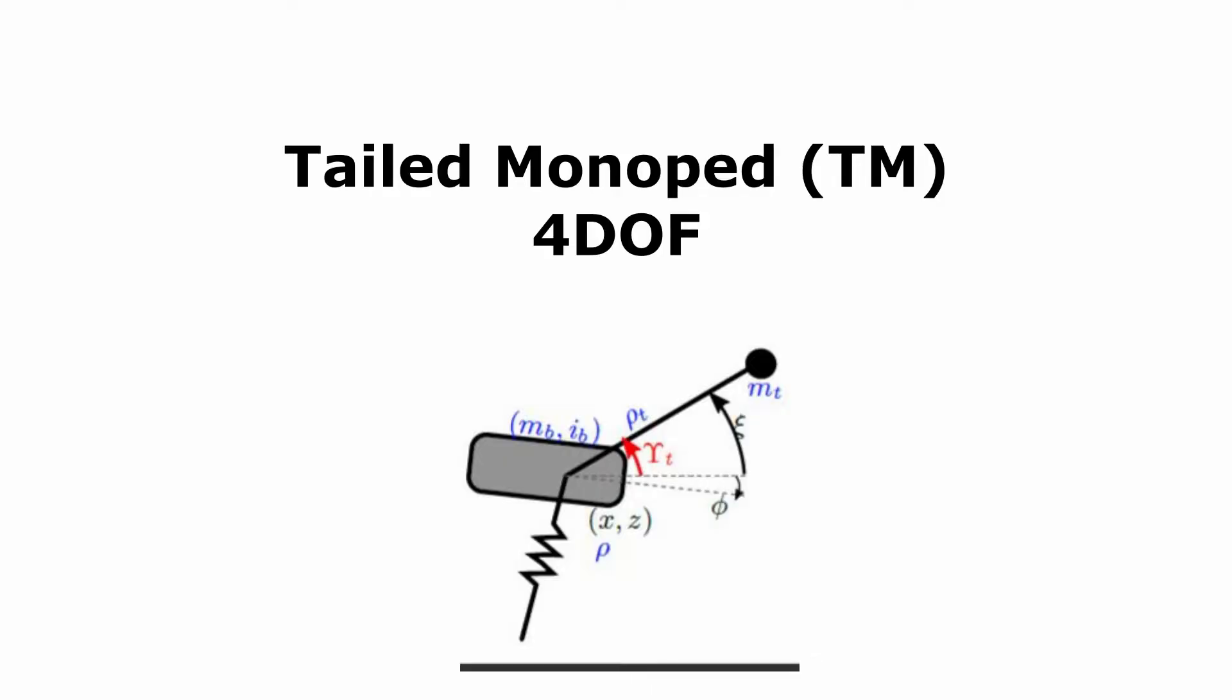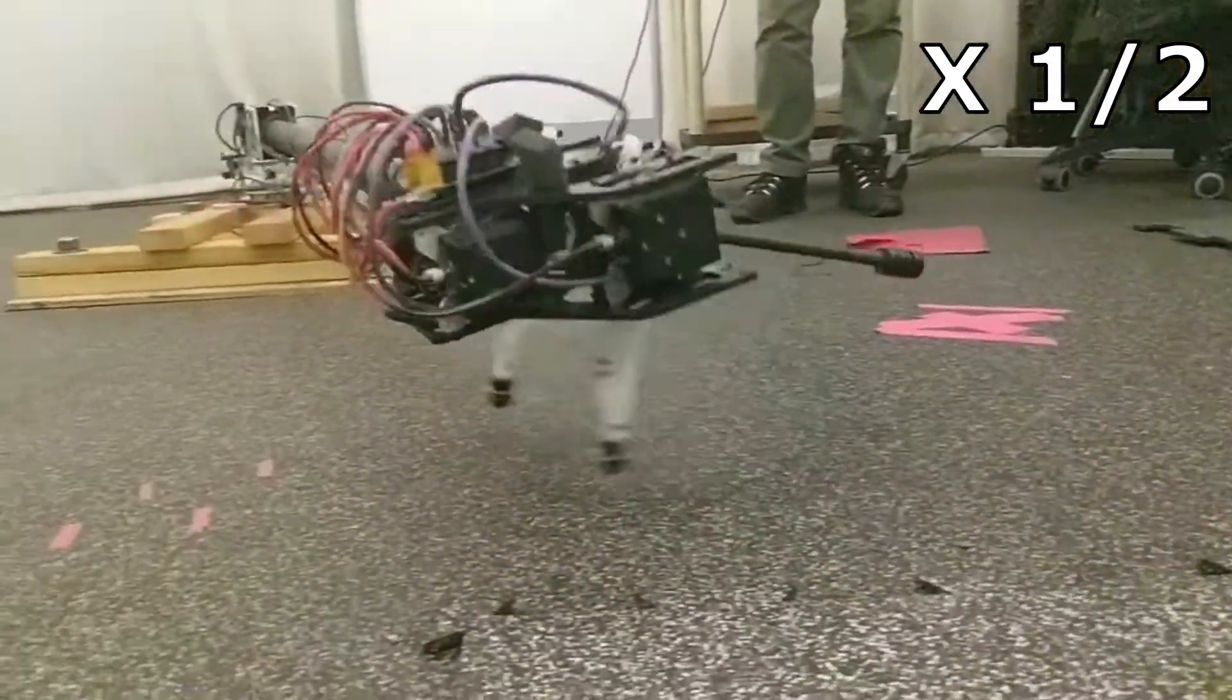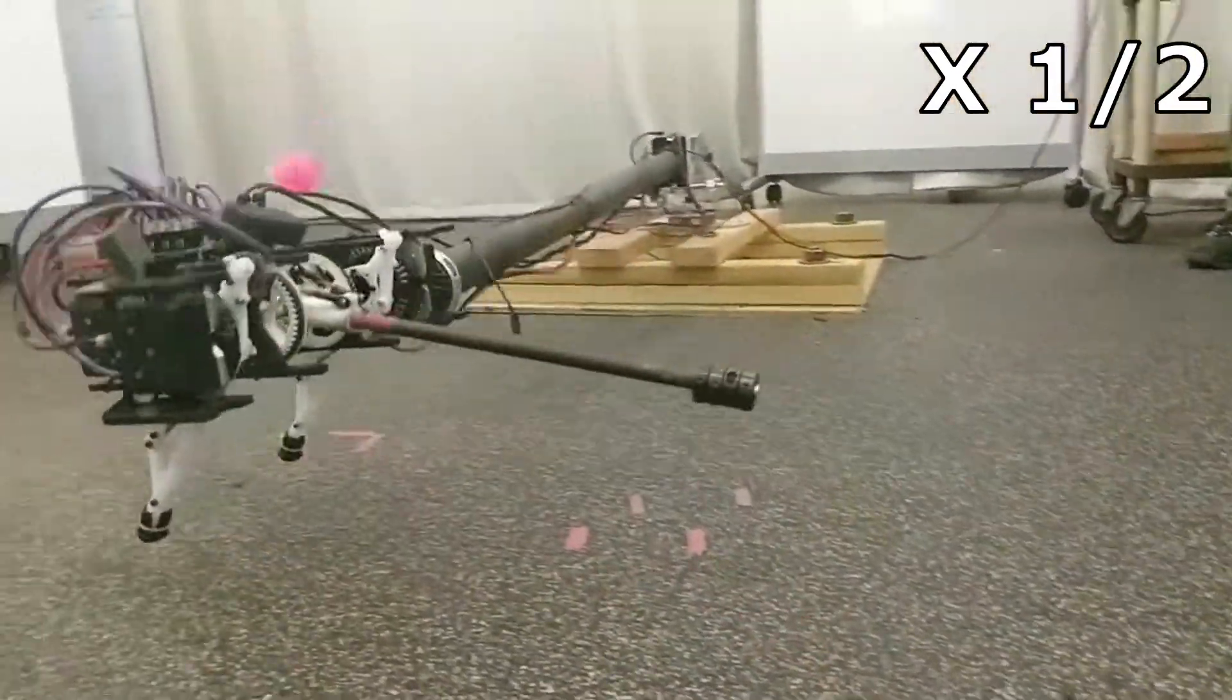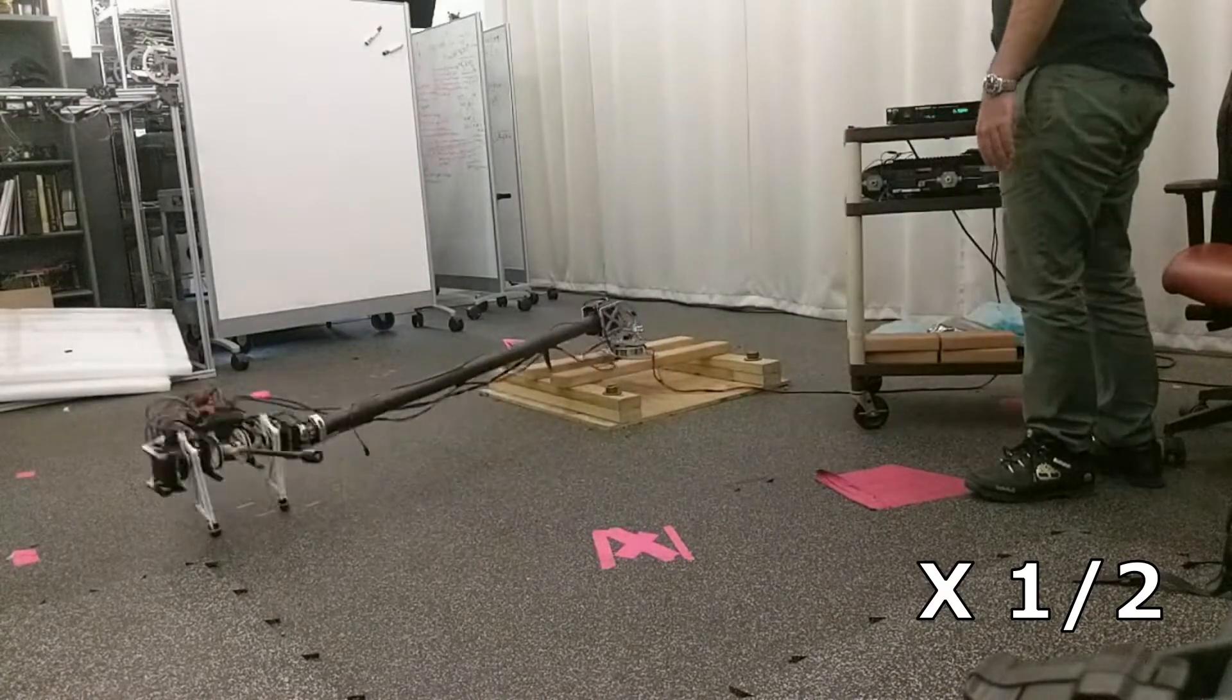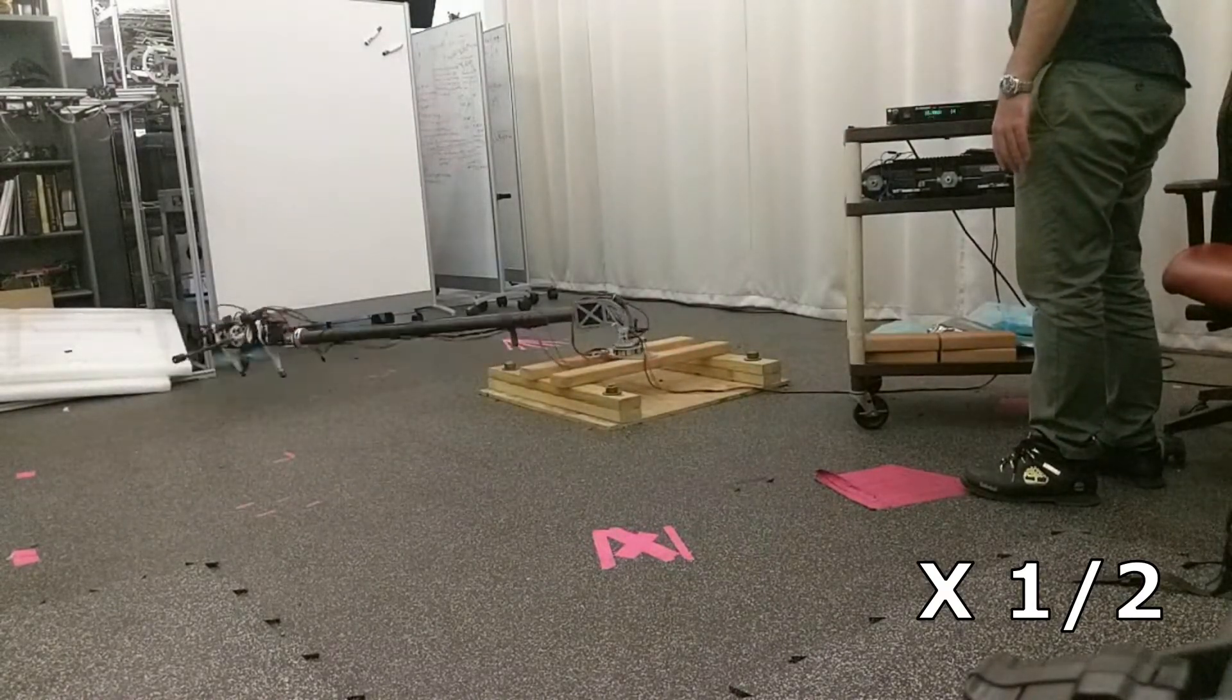In four degrees of freedom, we were able to get stable hopping with controllable speed, due in part to our design improvement. This was not possible in previous iterations of the Jerboa.